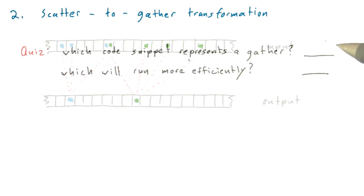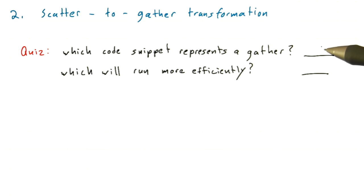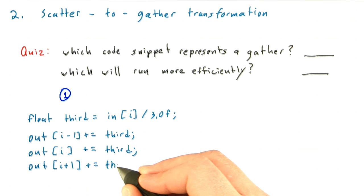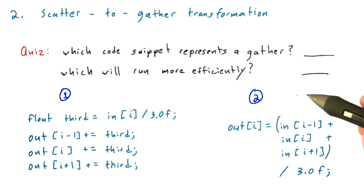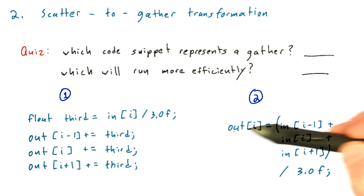So here's a quick quiz, which should be pure review. Which code snippet represents a gather, and which one will run more efficiently? Here's code snippet 1, and here's code snippet 2. In each of these cases, you can assume that out and in are arrays of floating-point numbers, and that I represents the thread index.